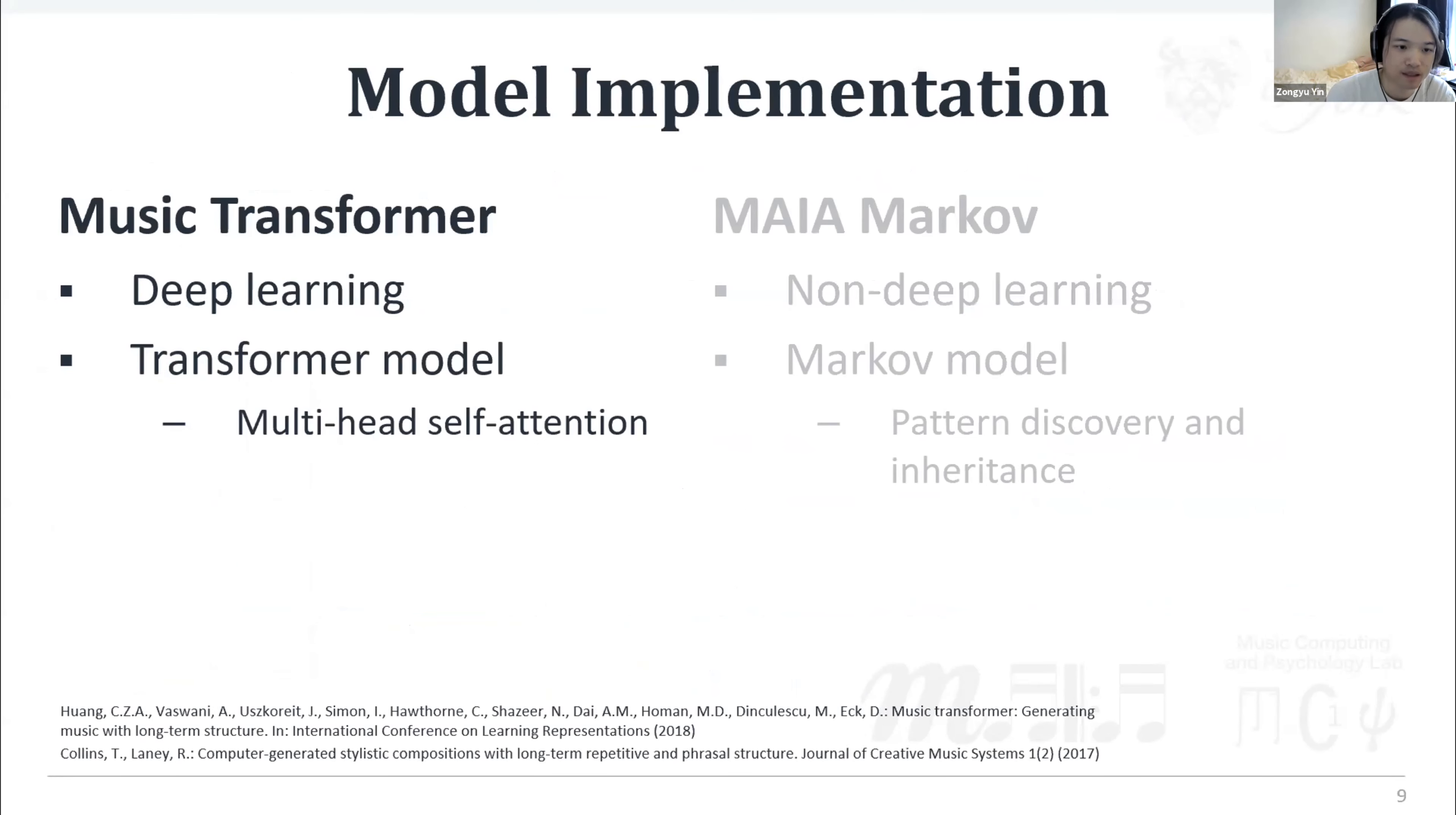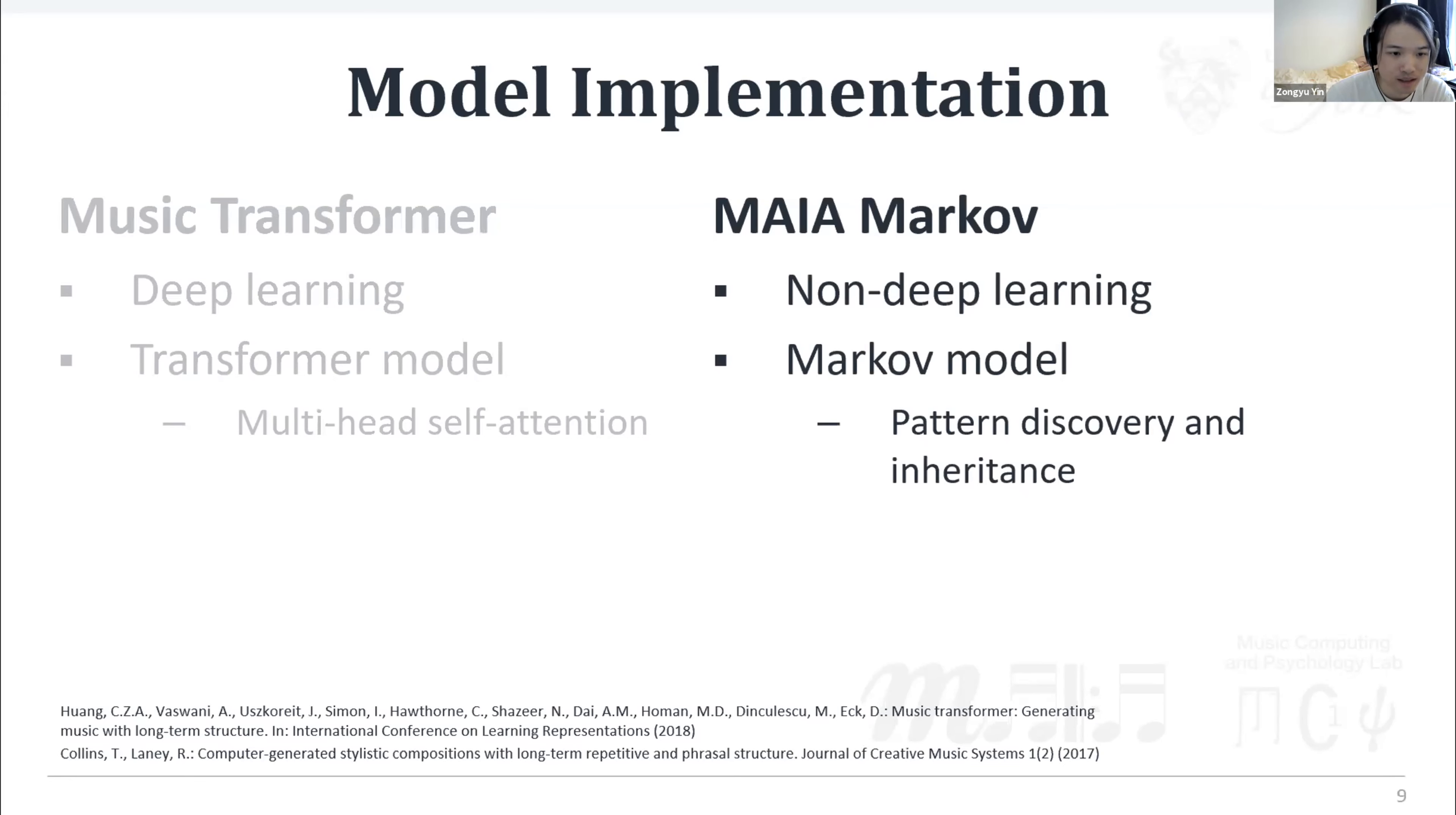Next, we implement two music generation models. The first one is Music Transformer, which is deep learning based, adapting the multi-head self-attention mechanism of Transformer model to capture long-term dependencies of note events. The second model is MAIA Markov. It is based on a Markov model, applying additional pattern discovery and inheritance to enable or guarantee the generated output review repetitive structures.